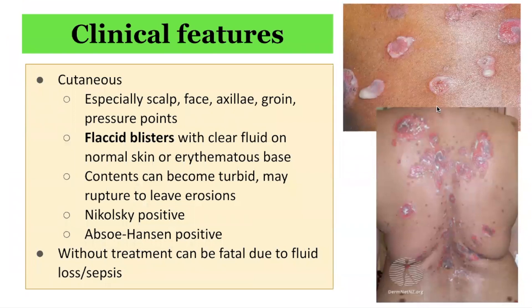In terms of cutaneous clinical features, the primary lesions are predominantly flaccid, thin-walled, and easily ruptured blisters. They can appear anywhere on the skin surface, usually arising on normal-appearing skin or erythematous bases. The fluid within the bullae is initially clear but can become hemorrhagic, turbid, or seropurulent. The blisters are fragile and soon rupture to form painful erosions that ooze and bleed easily. These erosions can attain a large size and become generalized, becoming partially covered with crusts with little tendency to heal. Lesions that do heal often leave hyperpigmented patches with no scarring.